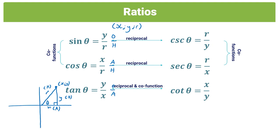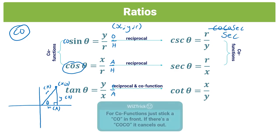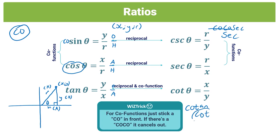We're also introducing co-functions. Cot and tan are both reciprocals and co-functions. Sine and cos are co-functions, as are cosec and sec. The easy memory technique: stick 'co' in front of any trig function to find its co-function. Co + sine = cosine (cos). Co + cosec = co-cosec, but co-co cancels, leaving sec. Co + tan = co-tan = cot.